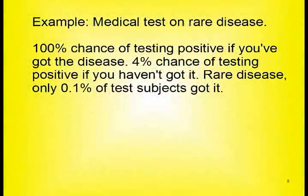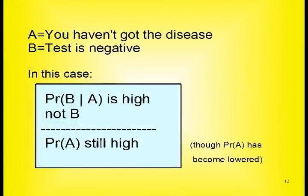Here's an example. There's a medical test for a disease that always gives a positive signal if you have the disease, and only has a 4% chance of giving a positive reading if you don't. But the disease is rare, with a 0.1% probability of any test subject having it. Over a thousand test subjects, you'd expect one to test positive because they have the disease, and about 40 to test positive falsely. Thus if you test positive, it only means that the chance of you having the disease has increased — but only from 0.1% to 2.4%. If you let A be 'you haven't got the disease' and B be 'the test reads negative,' you get the ingredients of our proposed probabilistic modus tollens — and as you saw, it wasn't true in this case. Model A has become less probable, but it is still the most probable model.